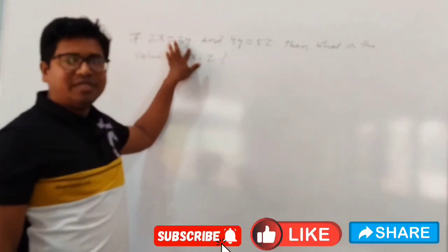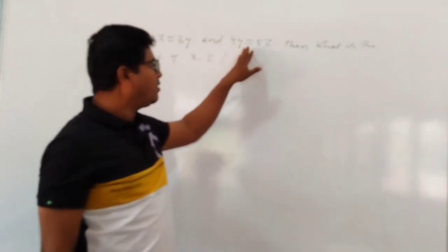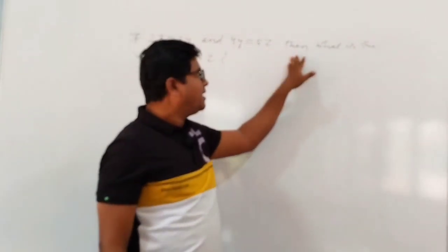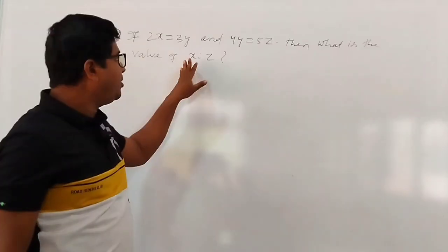If 2x equals 3y and 4y equals 5z, then what is the value of x to z?